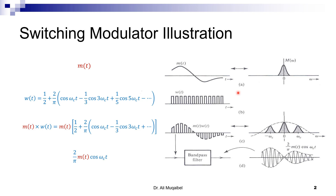The output of the band-pass filter will be the original signal multiplied by a cosine. Recall how to sketch a signal multiplied by cosine: we get the positive trace of the envelope, then the negative image of that, and then we fill it with a cosine.